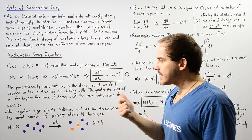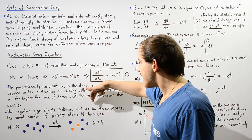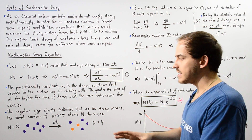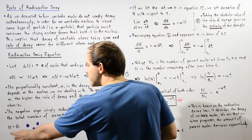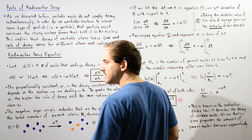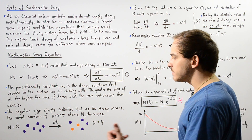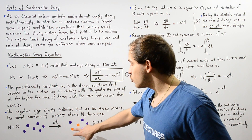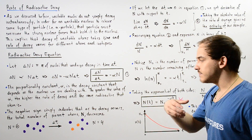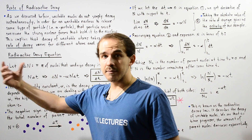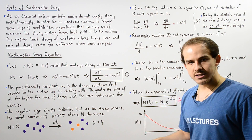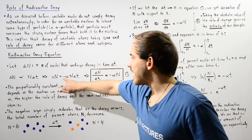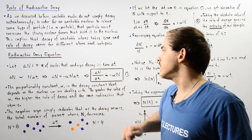The negative sign simply indicates that as the decay occurs, the total number of parent atoms N decreases. For example, at some initial time our N was six — we had six unstable nuclei. After some time delta T, we now have four. So two atoms have undergone radioactive decay, and as time increases, N decreases. Four minus six gives us a negative value, and that's exactly why we place the negative sign in front of our alpha.